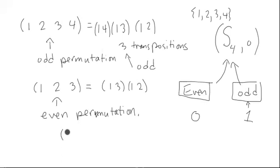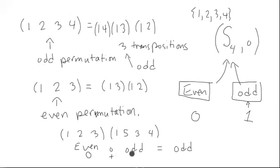So you can use that idea as follows. If we have (1, 2, 3) composed with (1, 5, 3, 4), we know this one right here is even. This one right here is odd. And composed together would give you odd, the same way as you would say 0 plus 1 equals 1.